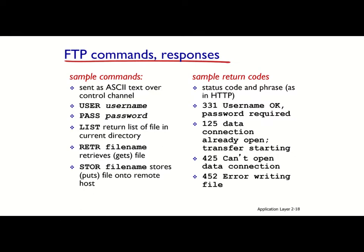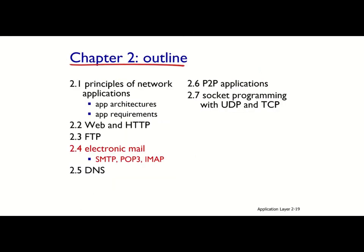Next we talk about electronic mail as another application of computer networks, and discuss three of the most famous application layer protocols that support electronic mail: SMTP, POP3, and IMAP. There are three major components in electronic mail. We have user agents, which are the mail readers like Outlook, Thunderbird, your iPhone mail application, or any other application you use for composing, editing, or reading mail messages.